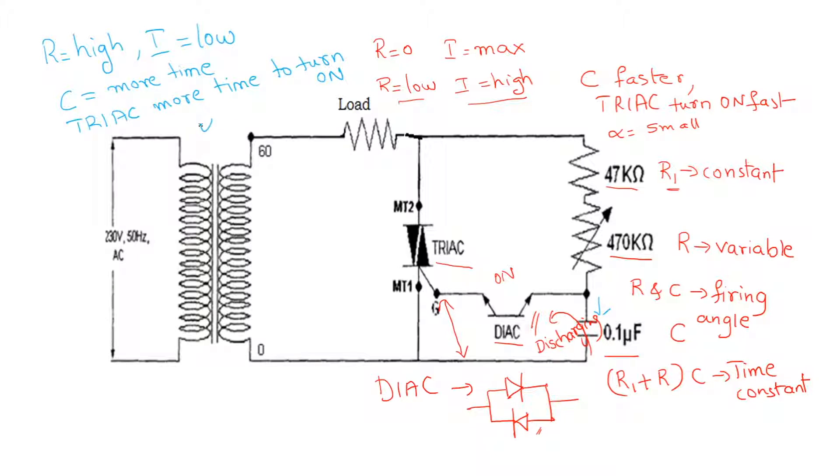The firing angle will be large, say around 90 or 100 degrees. Your resistor R and capacitor C will decide your firing angle. The firing angle can be varied between 0 to 180 degrees by properly selecting R and C values. Practically, you can achieve firing angles around 20 to 150 or 160 degrees, not exactly 180 degrees.